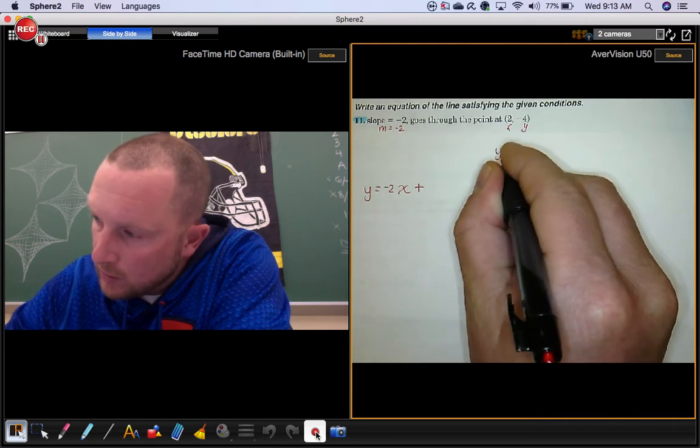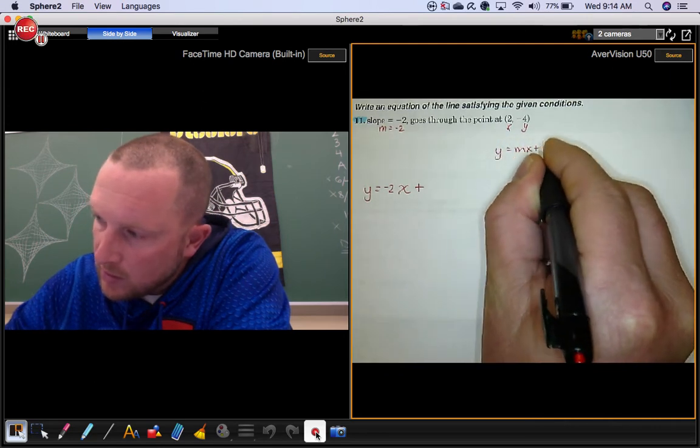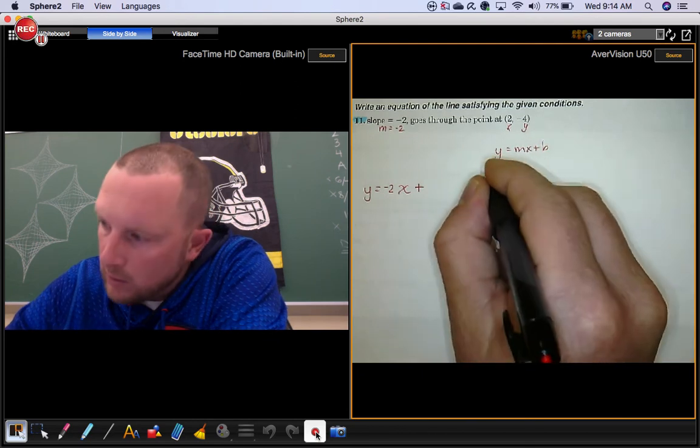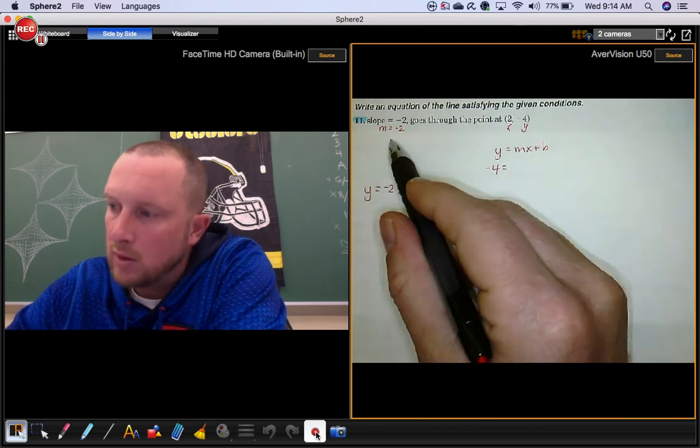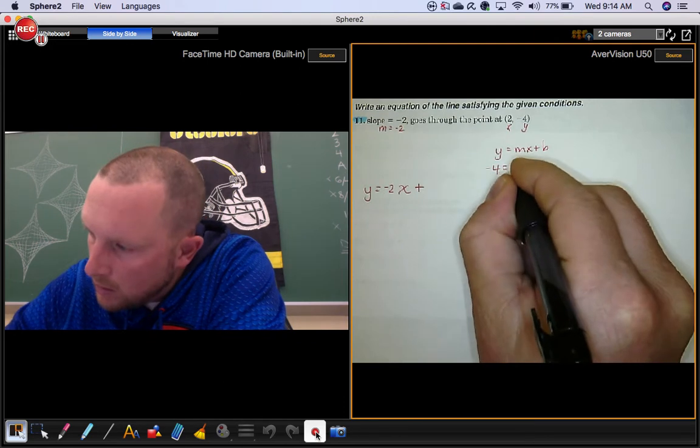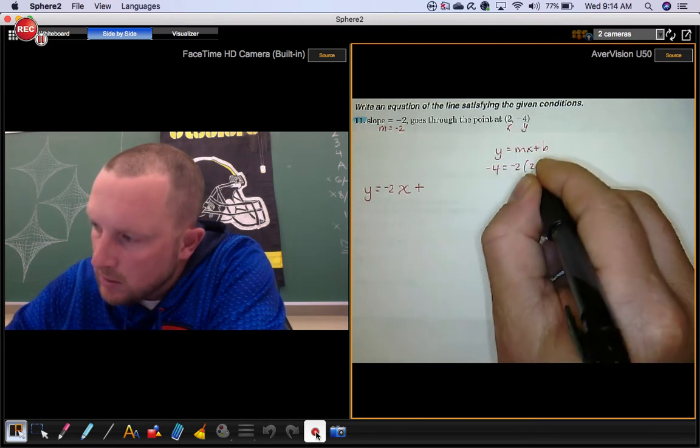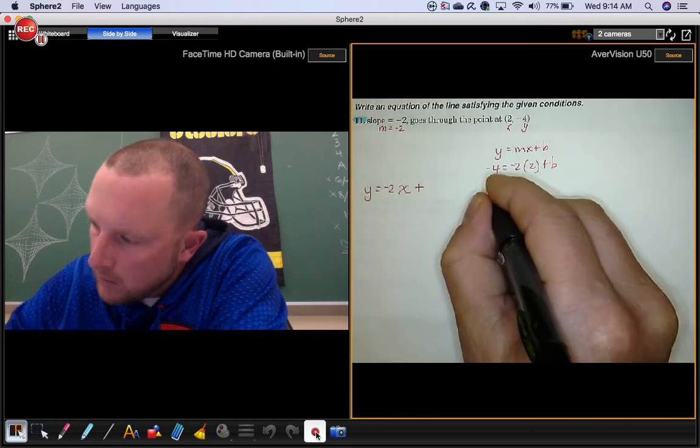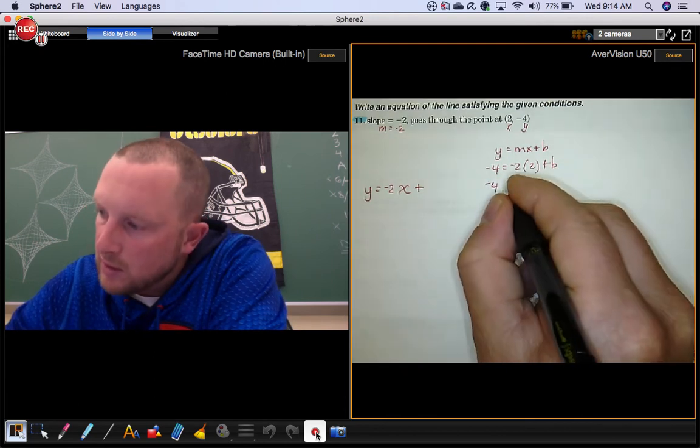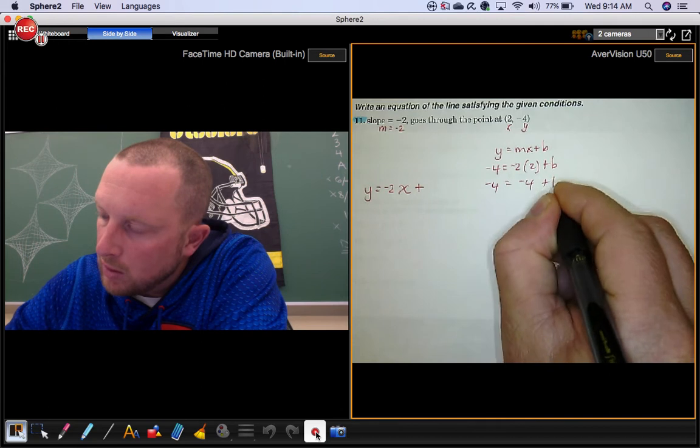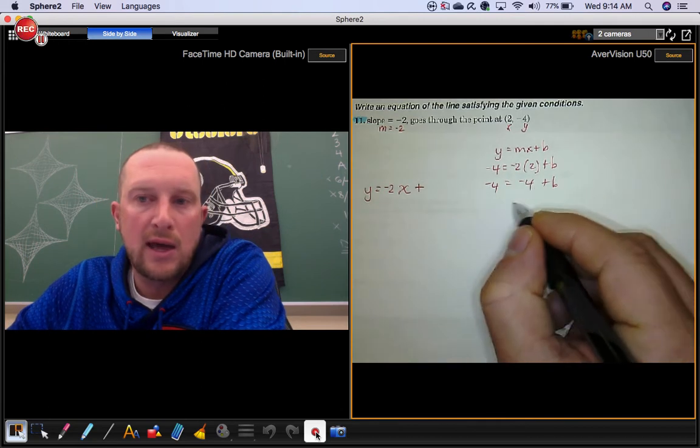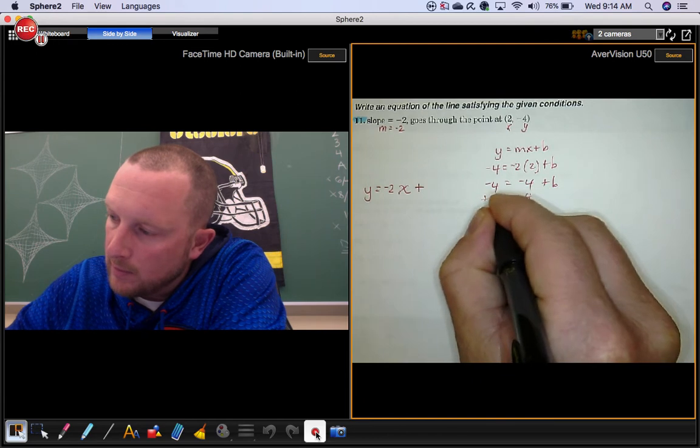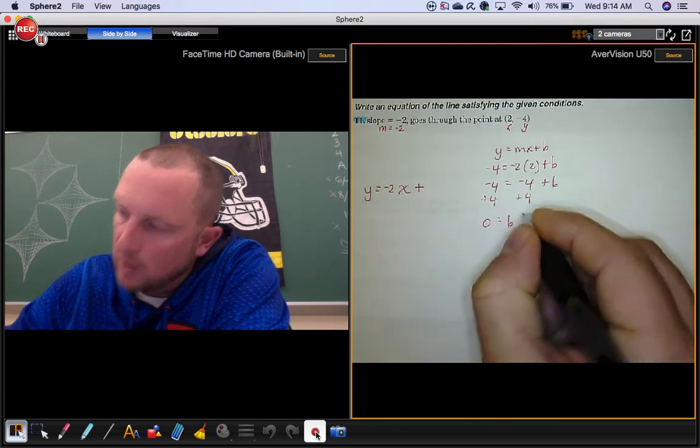So we're going to do this. Write down y equals mx plus b and you're going to plug in your y value, your m value, your x, and you're going to solve for b. Negative 2 times 2 is negative 4. Add 4 to both sides. When you do that, you get a 0 for your y-intercept.